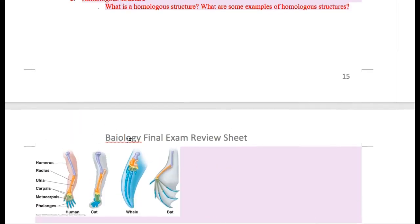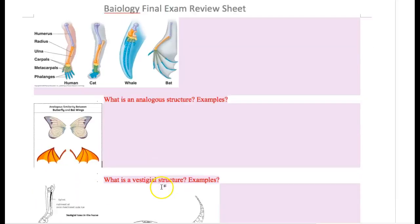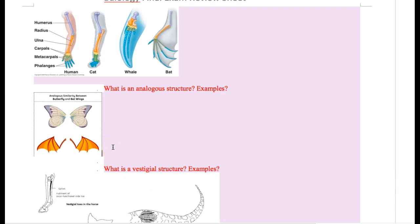Later we're going to see these two words: convergent evolution and divergent evolution. Divergent evolution is where you start with one common ancestor but diverge into different species. Convergent evolution is where you start with different ancestors but they converge, coming together and having similar traits.